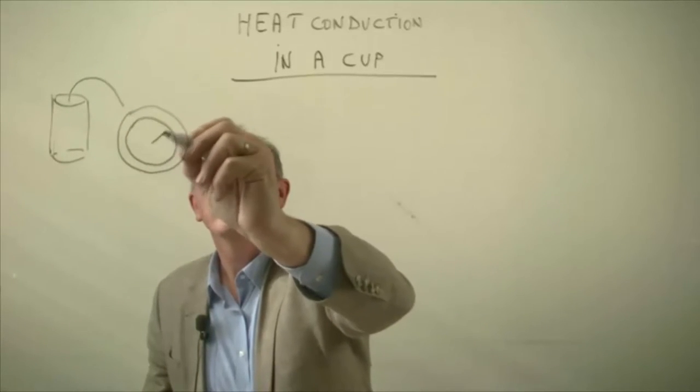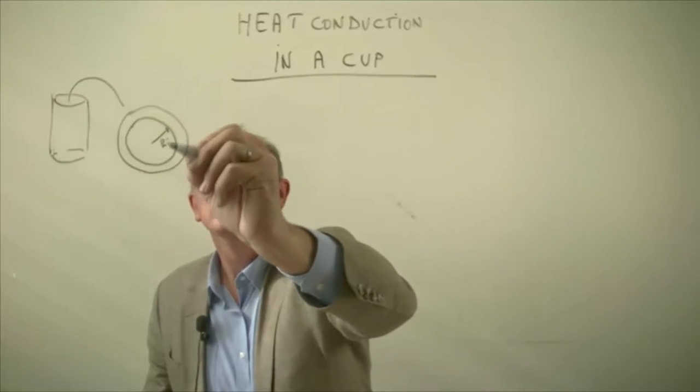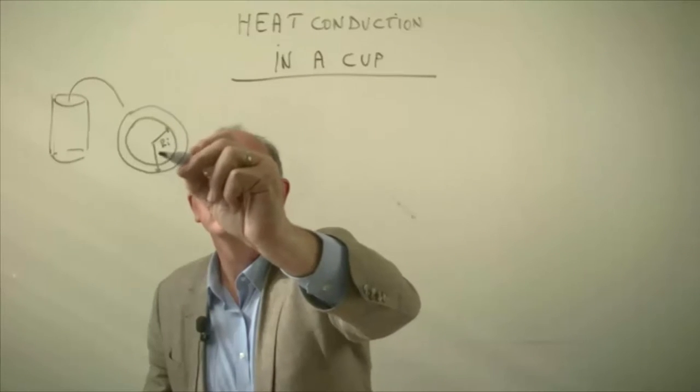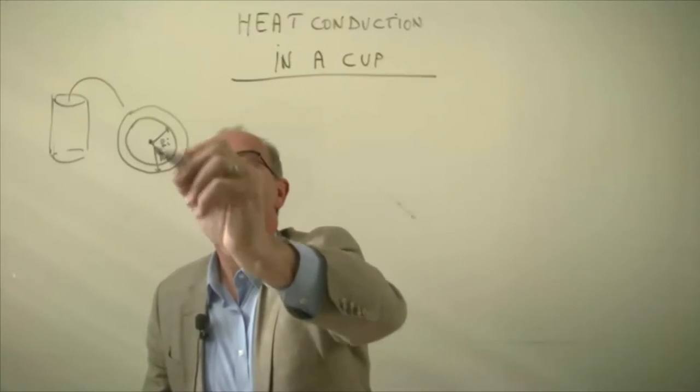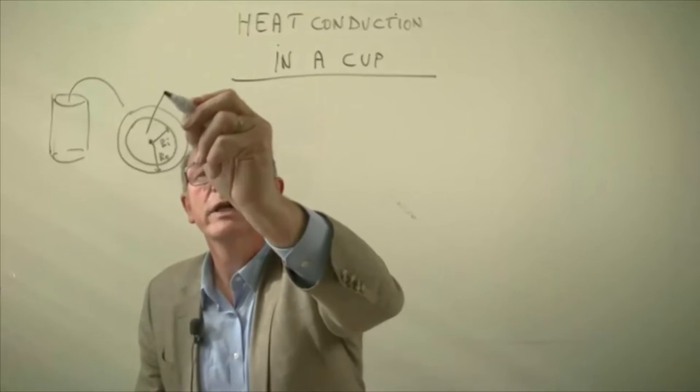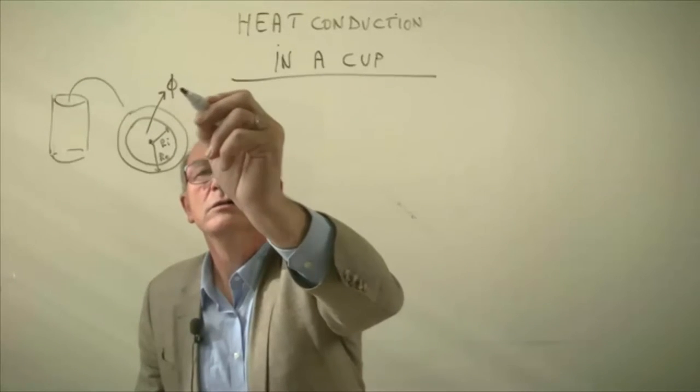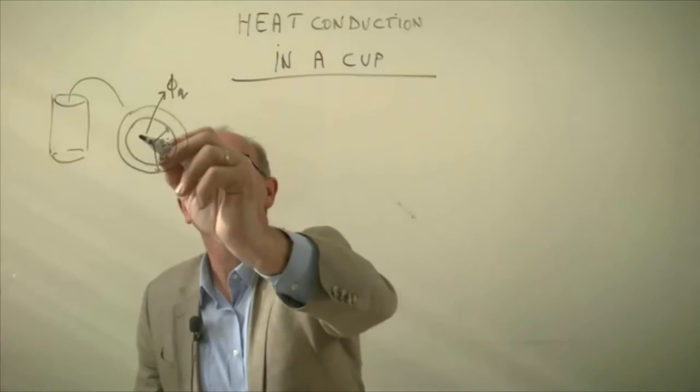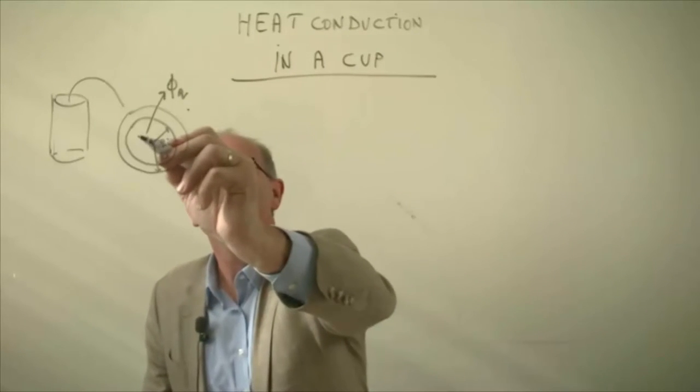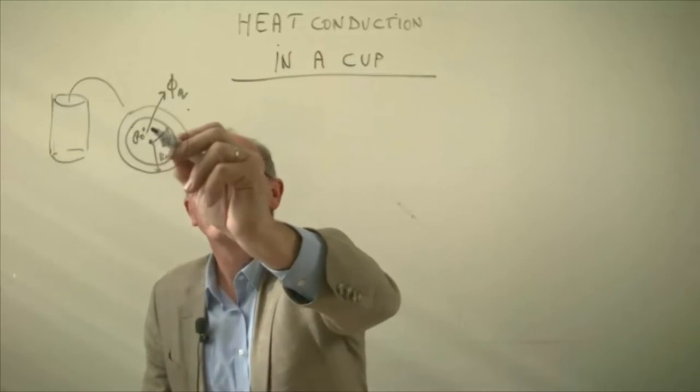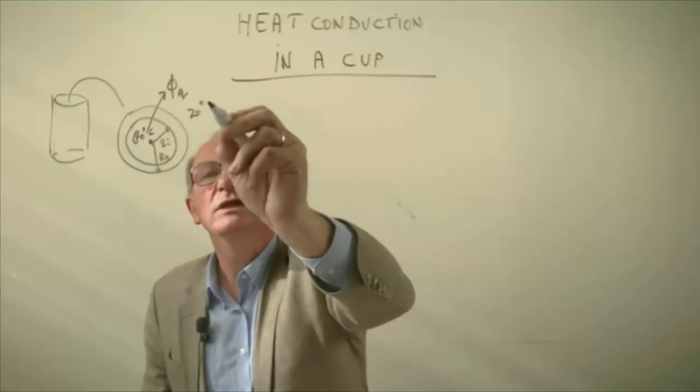So we have an inner diameter and an outer diameter and in this case we want to calculate how much energy is lost to the surroundings. If this is a hot liquid with cold surroundings, let's say 80 degrees C here and 20 degrees C here.